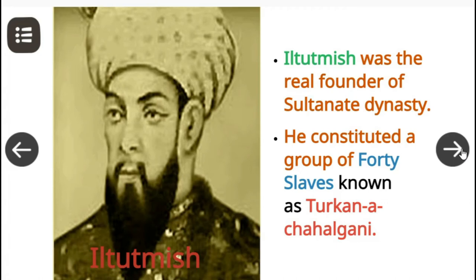Qutbuddin was succeeded by his son-in-law Ilthutmish. Ilthutmish is called the real founder of the Sultanate dynasty. He constituted a group of 40 slaves known as Turkane Chahilgini. He was the first to mint gold and silver coins and he introduced the Tanqa of silver and the Jital of copper.